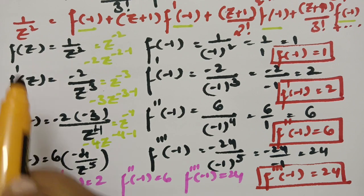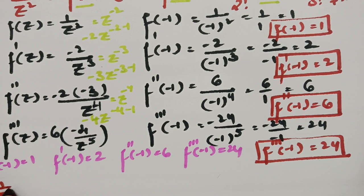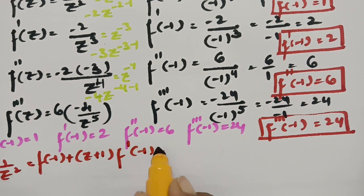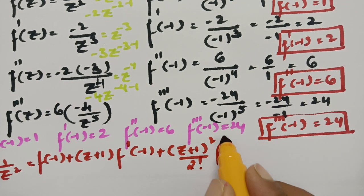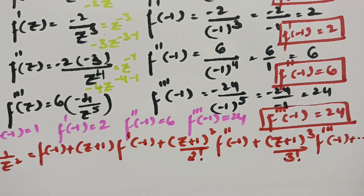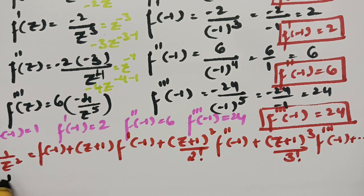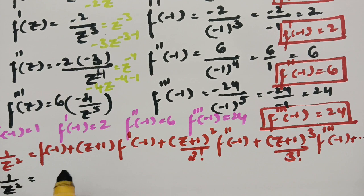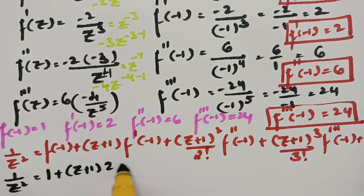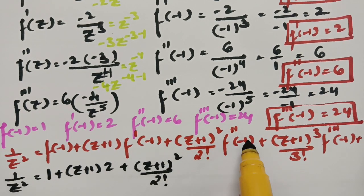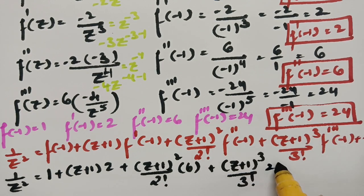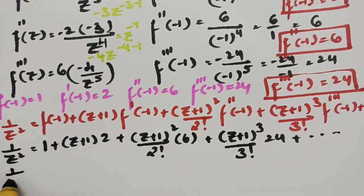According to the Taylor series expansion, substituting all values: 1/z² = f(−1) + (z+1)·f'(−1) + (z+1)²/2! · f''(−1) + (z+1)³/3! · f'''(−1) + ... = 1 + (z+1)·2 + (z+1)²/2 · 6 + (z+1)³/6 · 24 + ...